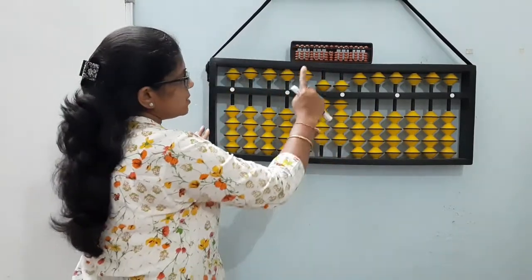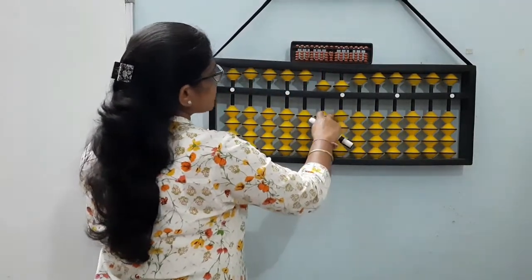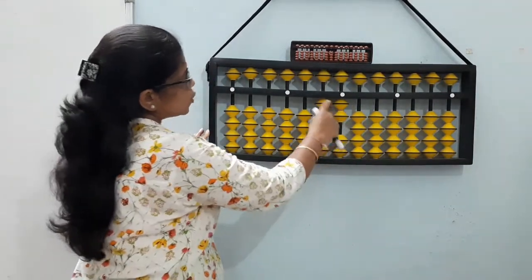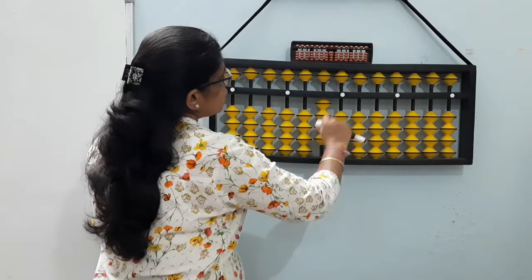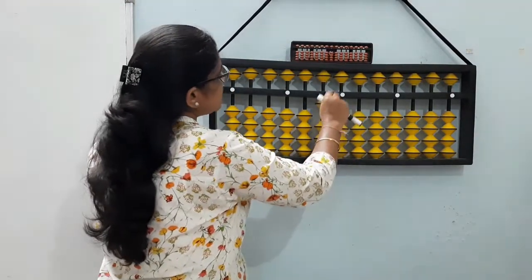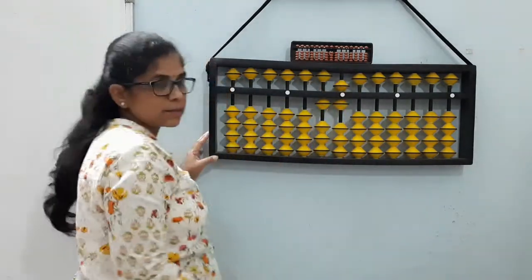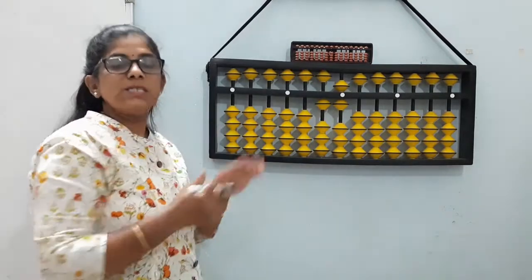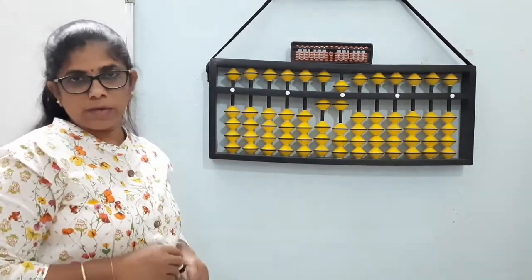if the beads are like this, the value is 99. Now if the bead is like this, 42. Here 4 and here 4. This is 44. If here is one and here is something like this, 10 and 6, 16. So this is how the numbers are formed on the abacus.